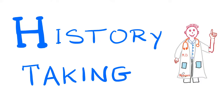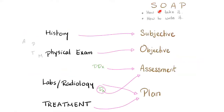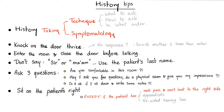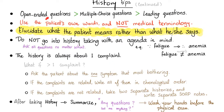It's Medicosis Perfectionitis, where medicine makes perfect sense, and today this is part two of how to take a good history. In the previous video, we talked about the big picture: first you take history — this is subjective — then the physical exam, which is objective, then you order labs or radiology, and last is the treatment. Diagnosis and differential diagnosis is in the assessment; what you're going to order is the plan. Remember the history tips from the previous video: ask open-ended questions and elucidate what the patient means rather than what he or she says.